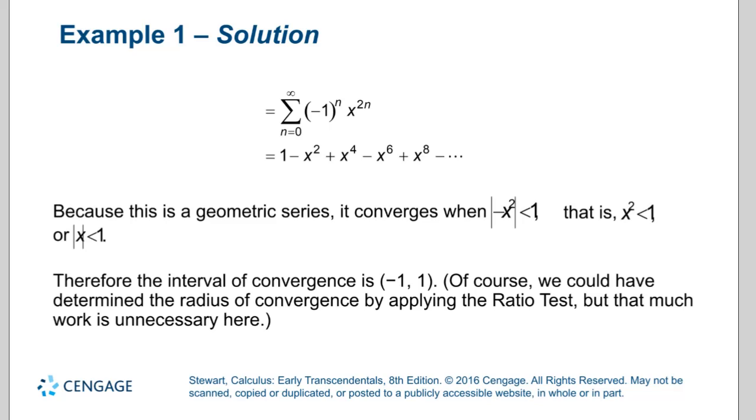The last part is to figure out when it converges. The normal series converges where the absolute value of x is less than 1. I'm going to replace the x with negative x squared. So the absolute value of negative x squared is just x squared, so x squared is less than 1. To do the calculations out, I get the absolute value of x is less than 1, so my interval of convergence is negative 1 to 1.